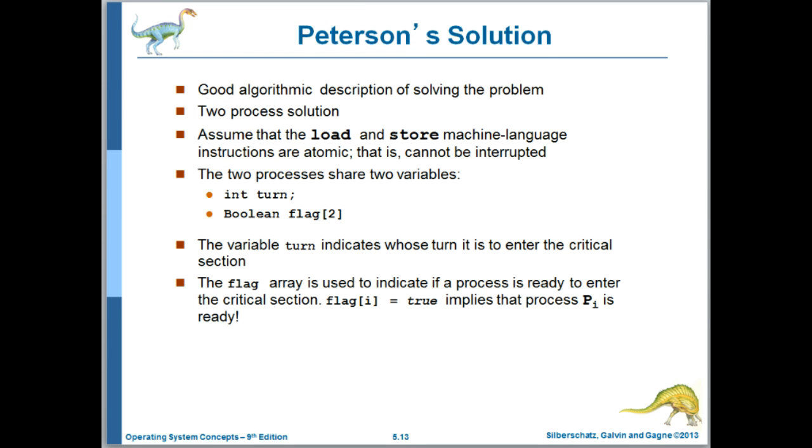We'll finish today with Peterson's solution to the critical section problem, which is a two process solution, as you can see here. And it assumes that at the machine level, the load and store operations are atomic. The entry and exit sections make use of two shared variables. Turn indicates which process has priority. And flag is used to indicate that a process is attempting to enter its critical section.